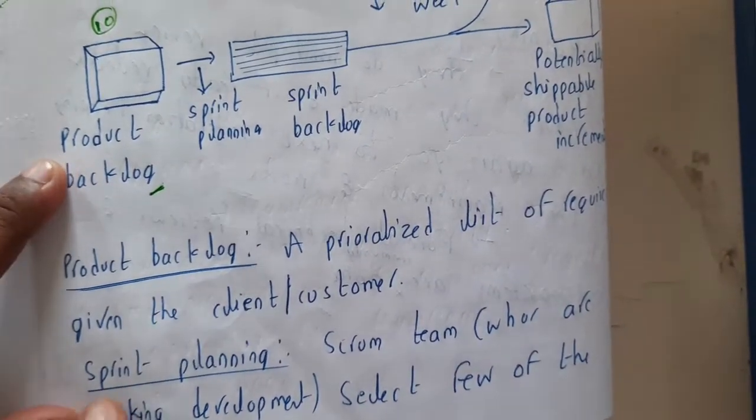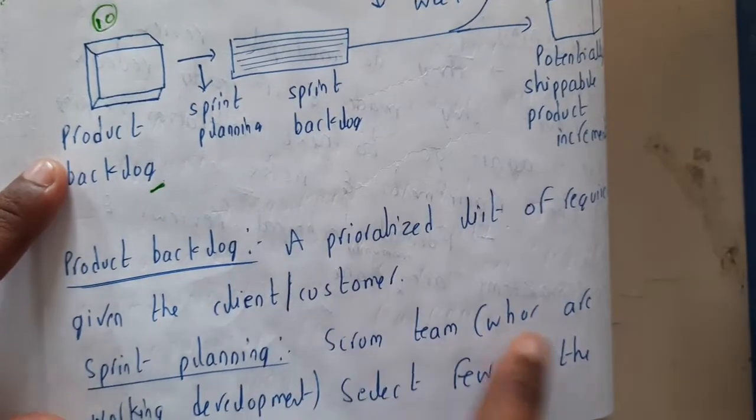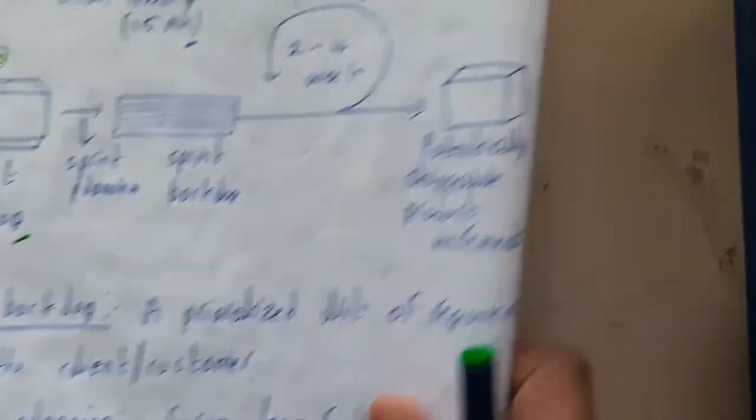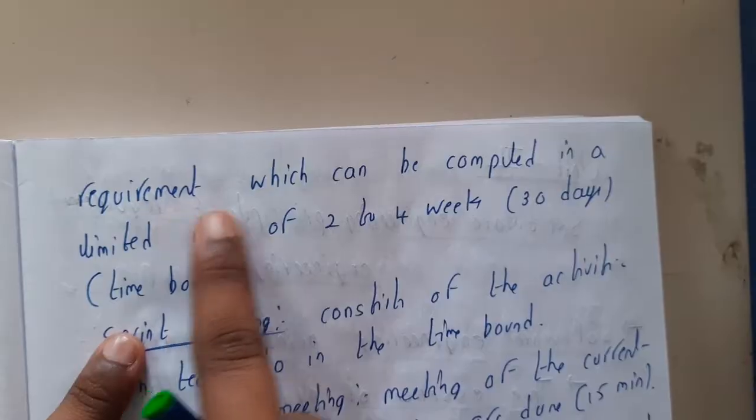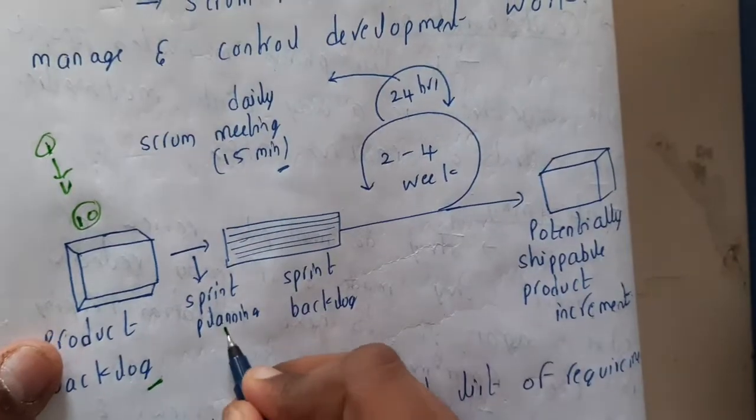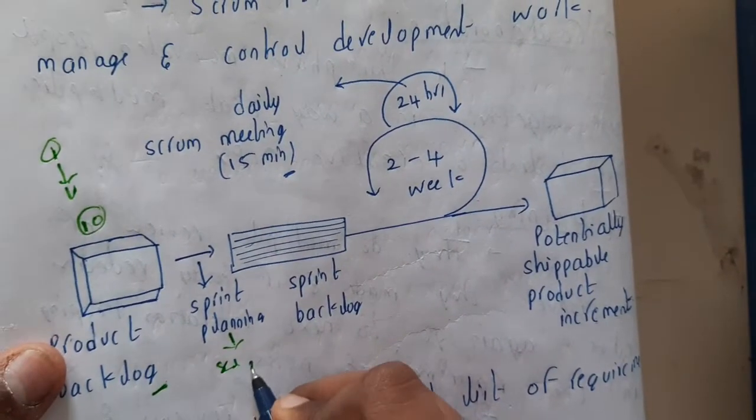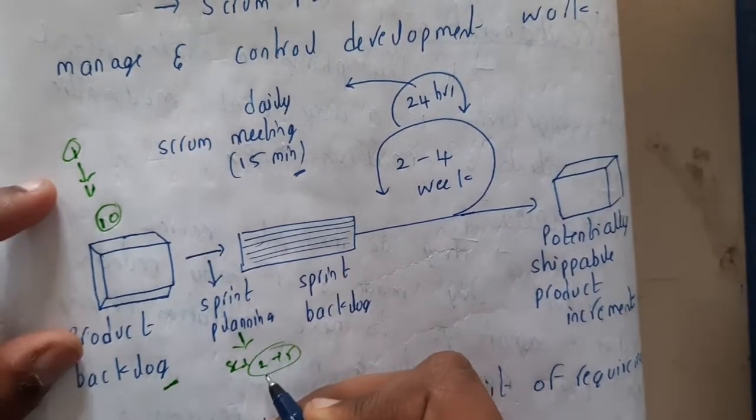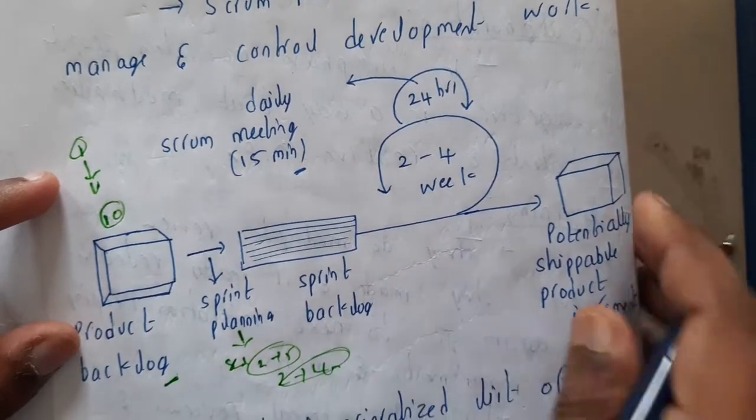Sprint planning is nothing but the scrum team who are working on development will select few of the requirements which can be completed in a limited time of 2 to 4 weeks. The team will be selecting some around 2 to 5 modules which can be completed in a span of 2 to 4 weeks, minimum of 2 weeks and maximum of 4 weeks.